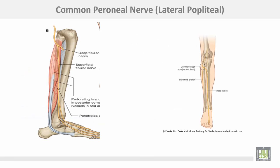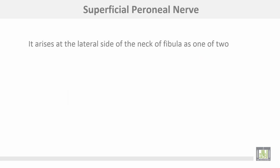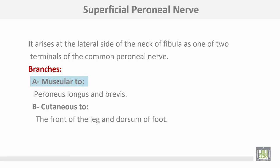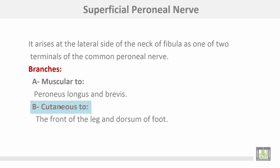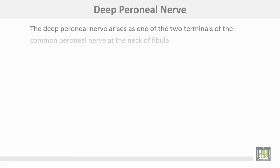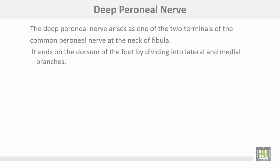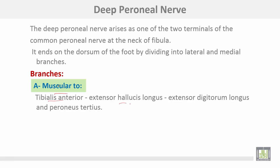This shows the branches of the common peroneal: the superficial peroneal and the deep peroneal. The superficial peroneal arises at the lateral side of the neck of the fibula as one of the two terminals of the common peroneal. It gives muscular branches to peroneus longus and previous cutaneous branches to the front of the leg and dorsum of the foot. The deep peroneal nerve also arises at the neck of the fibula and ends in the dorsum of the foot dividing into lateral and medial branches. Its muscular branches supply tibialis anterior, extensor hallucis longus, extensor digitorum longus, and peroneus tertius.